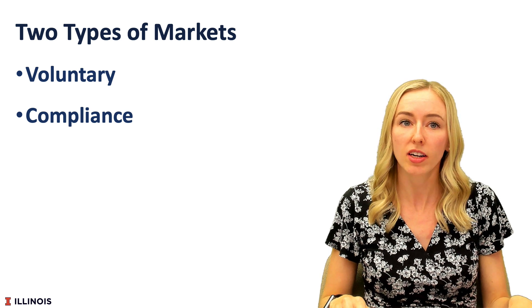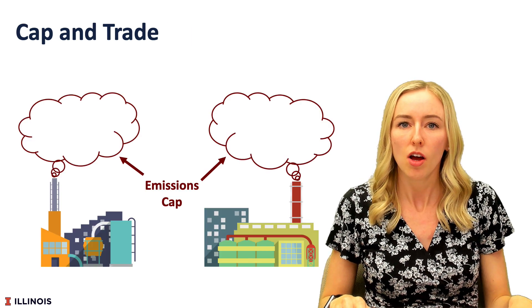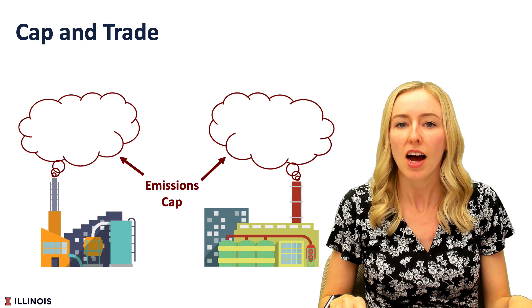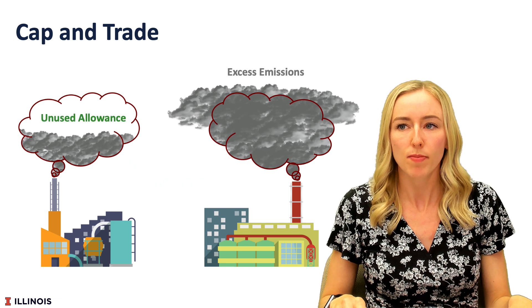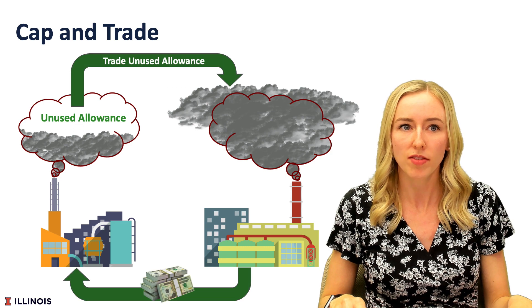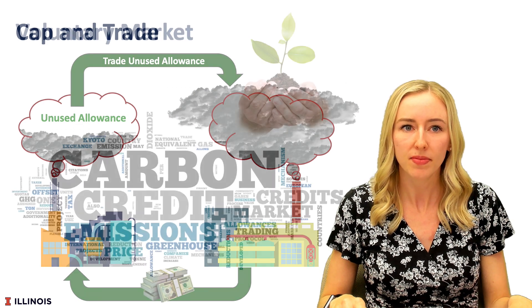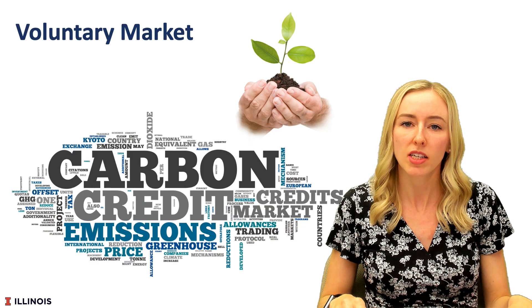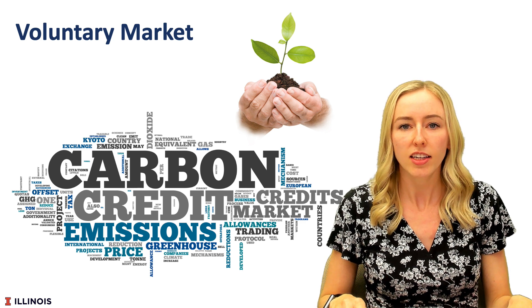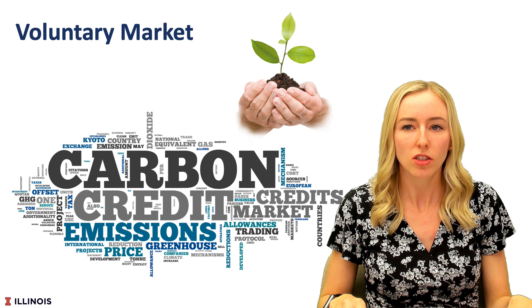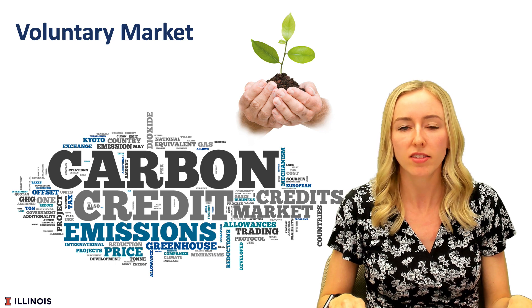In a compliance market, a cap-and-trade system is used where the government tells each company how much it's allowed to pollute, and if the company wants to pollute more than this amount, they must purchase carbon credits to offset this additional pollution. In a voluntary market, companies voluntarily purchase carbon credits to offset their emissions, likely to reach net zero emissions goals set by their company or by their stakeholders. The U.S. market is voluntary, but some states have cap-and-trade systems for certain emitters.